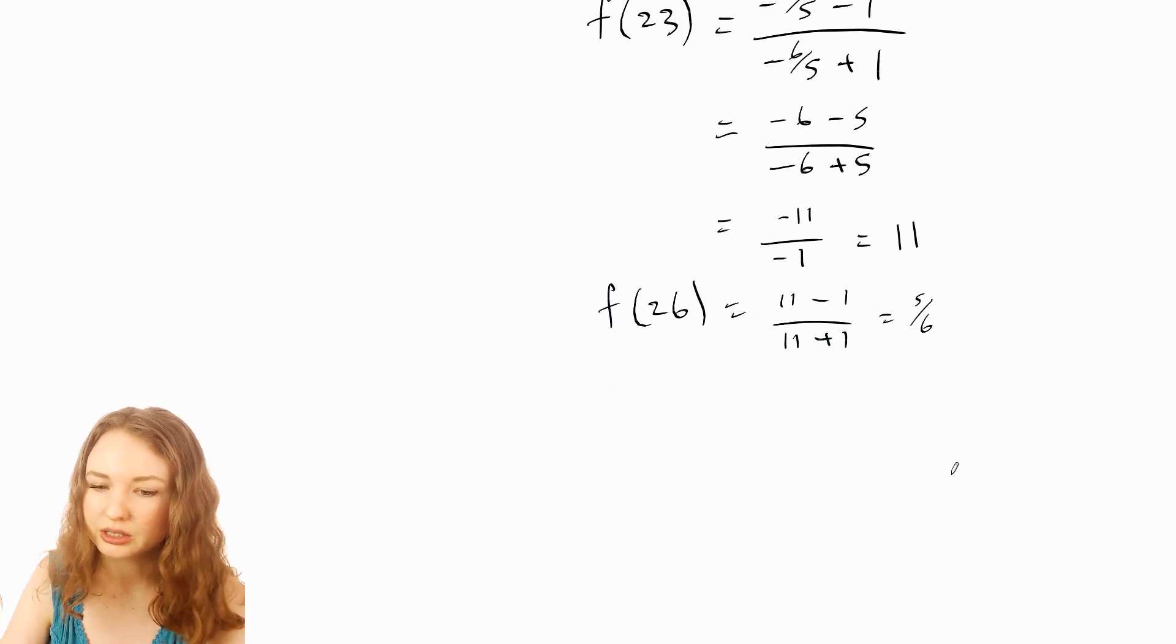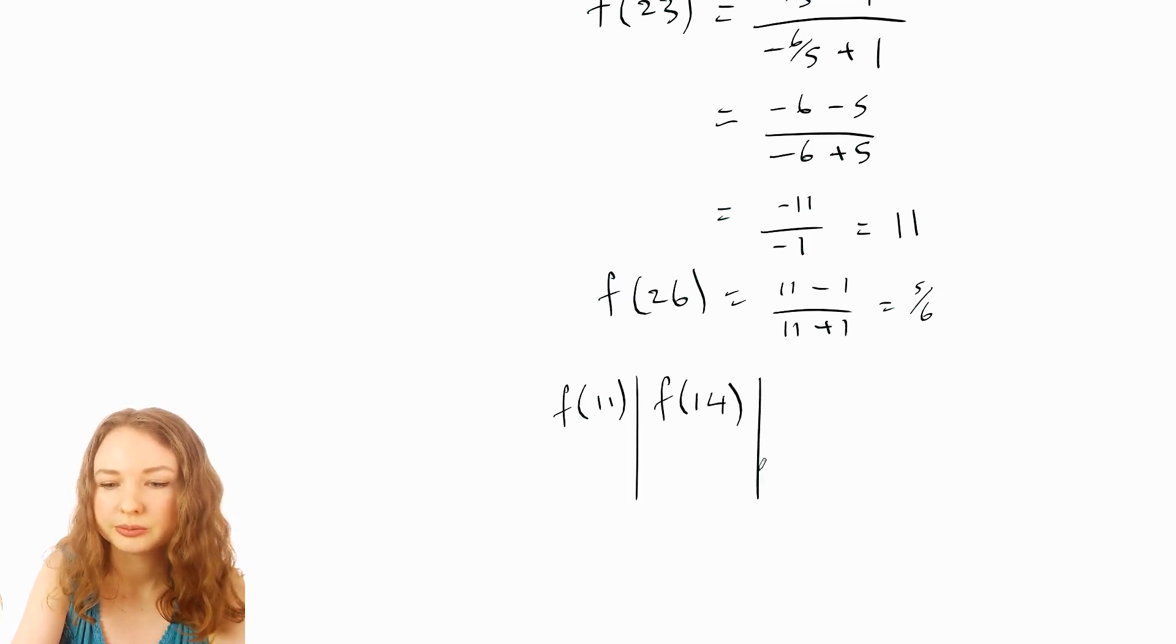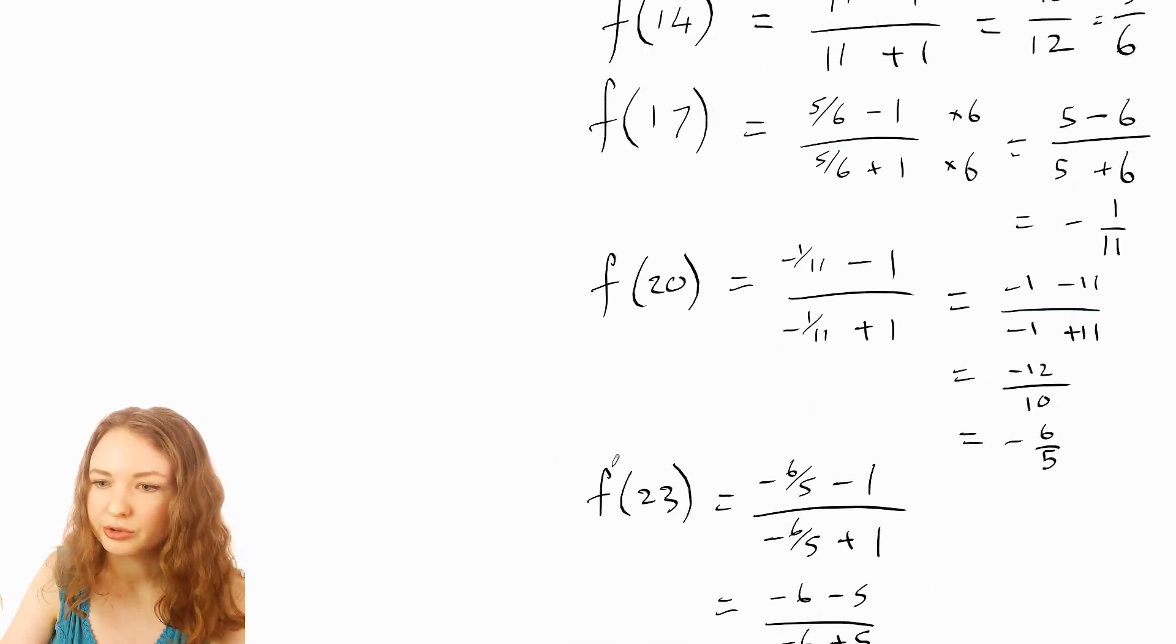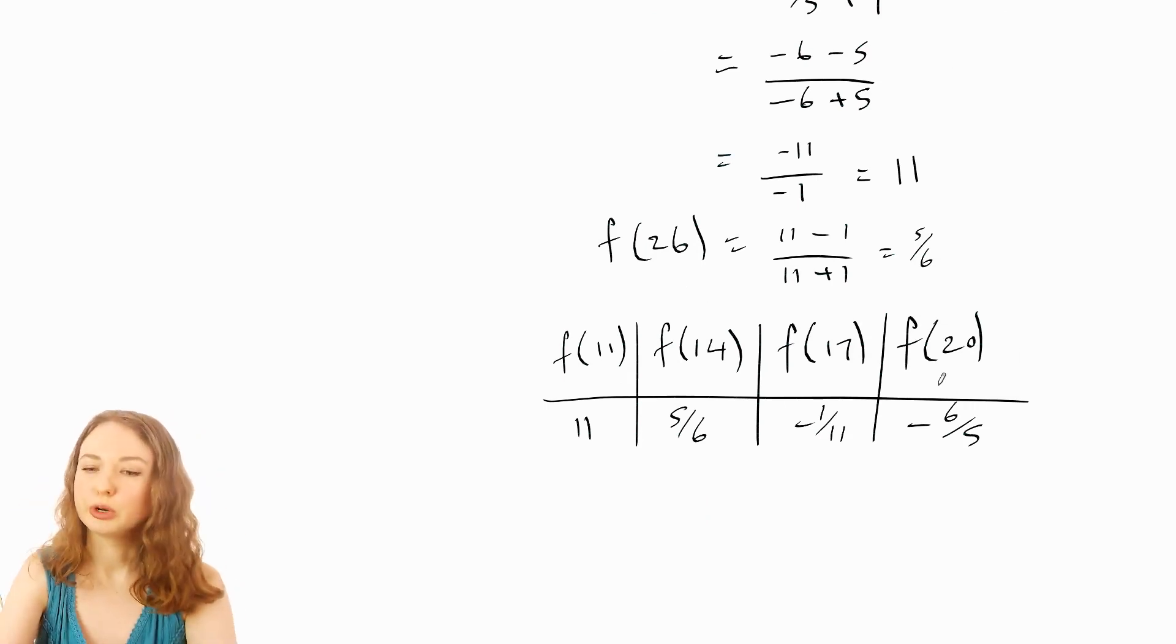So what I might do is just write these out in a table. So we had f of 11, f of 14, f of 17, and f of 20 and they were 11, the f of 14 was 5 over 6, then we had negative 1 over 11 and negative 6 over 5.